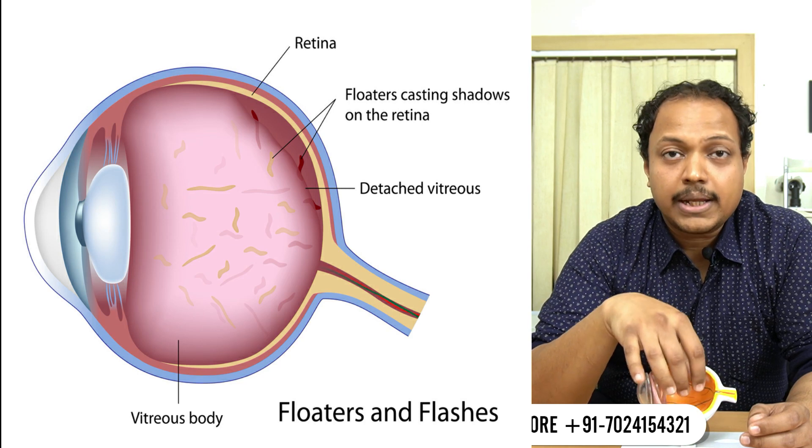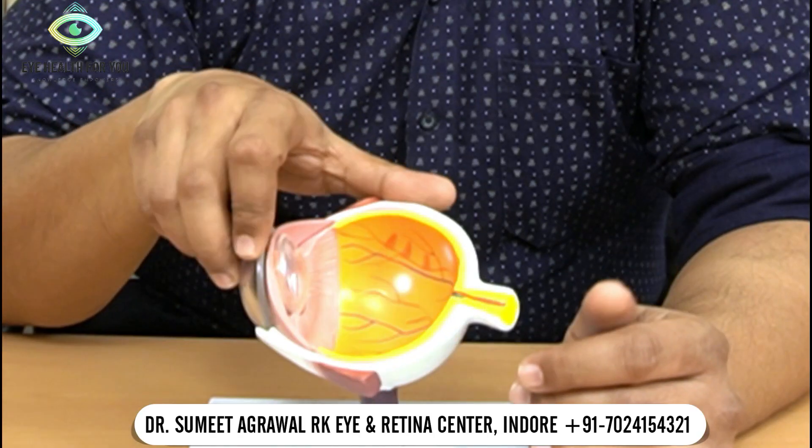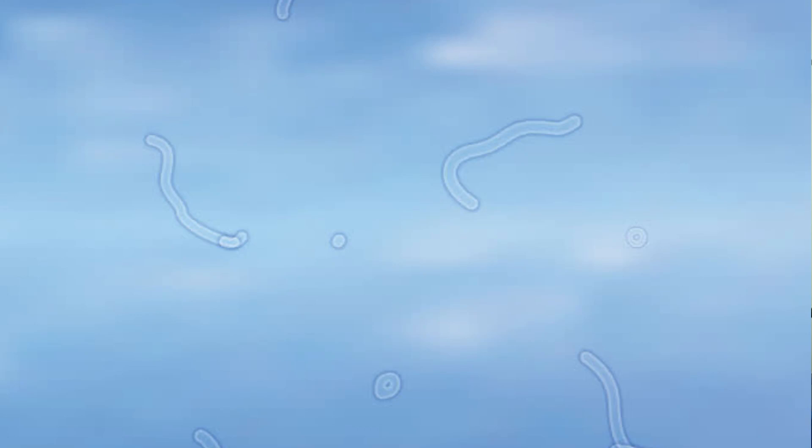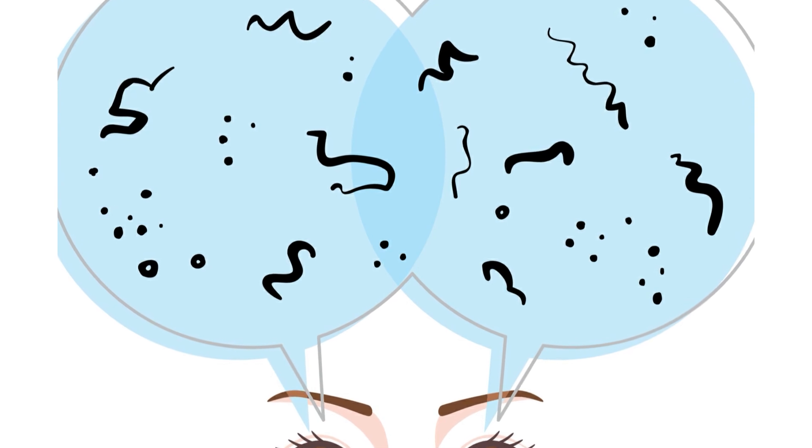These protein clumps start forming and they float around inside the gel. As the eye moves, these particles also start moving. These particles form a shadow on the back part of the eye — on the retina. This is exactly what we see as floaters. Floaters can appear in very different shapes according to the shape of the protein clump: dots, hair strands, or a bunch.